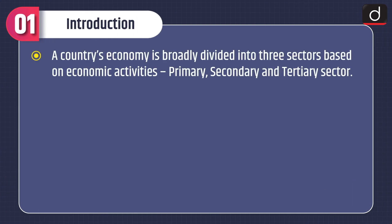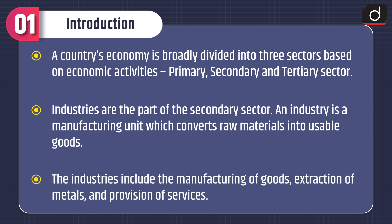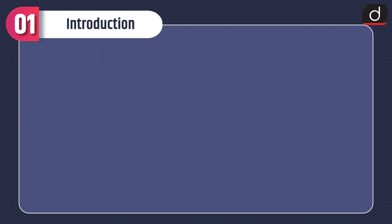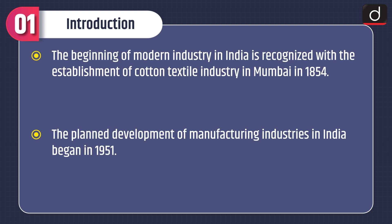Let's have a look at the introduction of the topic. A country's economy is broadly divided into three sectors based on economic activities: primary, secondary, and tertiary sector. Industries are part of the secondary sector. An industry is a manufacturing unit which converts raw materials into usable goods. Industries include the manufacturing of goods, extraction of metals, and provision of services. The beginning of modern industry in India is recognized with the establishment of the cotton textile industry in Mumbai in 1854. The planned development of manufacturing industries in India began in 1951.